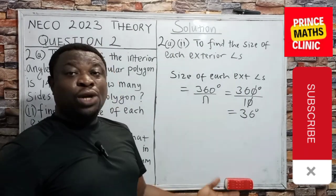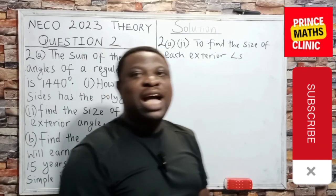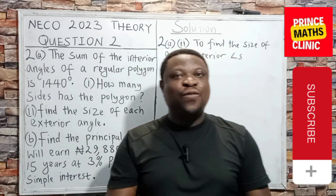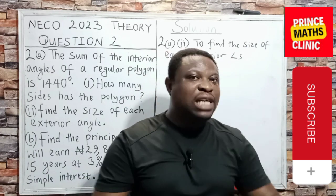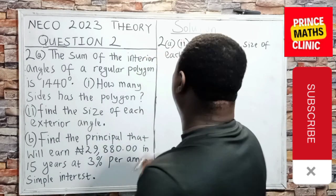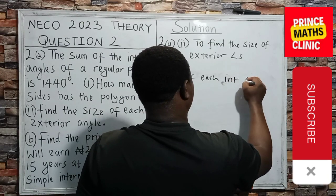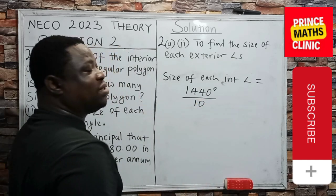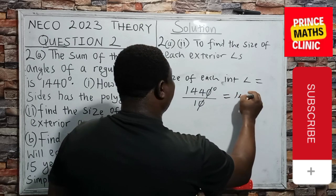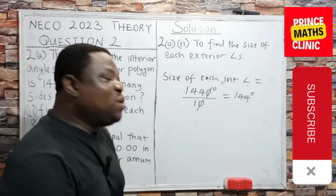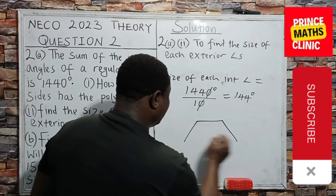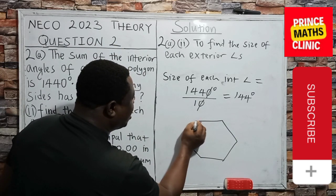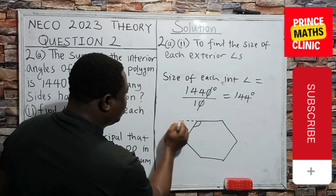Now, how else can we solve this? Another method of solving this is acknowledging the fact that it has 10 sides and the total number of angles interiorly is 1,440 degrees. Remember, I said in a regular polygon, all the interior angles are the same. Therefore, size of each interior angle is 1440 divided by 10, which is the number of sides. 0 cancels 0. So you have 144.